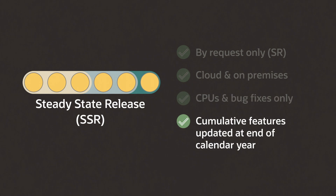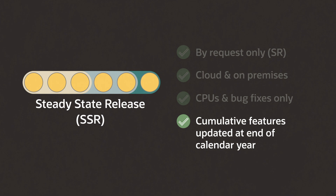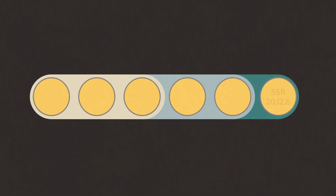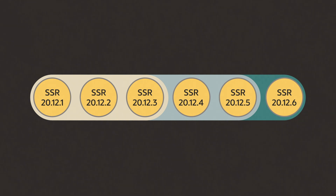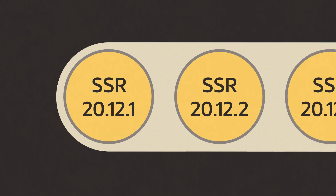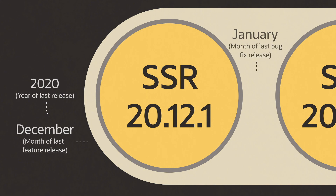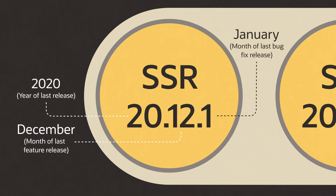The end-of-the-year release would then contain all features released over the course of the year. The SSR release is based on the last feature release. Since that's the only year on the SSR path — the year of the last feature release, month of last feature release, and then finally the month of the regular CPU and bug fix update.